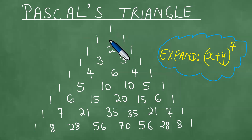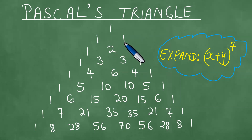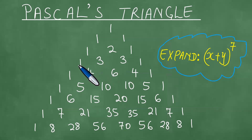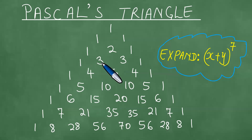We begin with a 1, and then we have two 1s. When you add the two 1s, you get 2, and you put 1s on the sides. Then 1 plus 2 is 3, 2 plus 1 is 3, and you put 1s on the sides. Then 3 plus 1 is 4, 3 plus 3 is 6, 3 plus 1 is 4, and you put 1s on the sides.